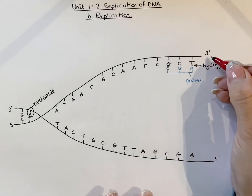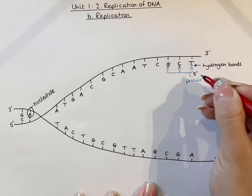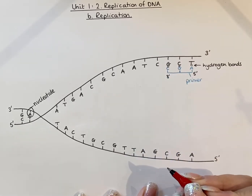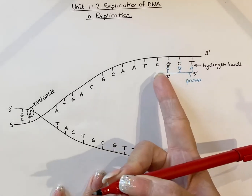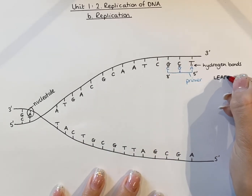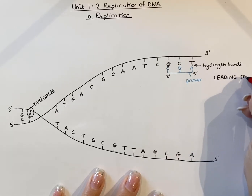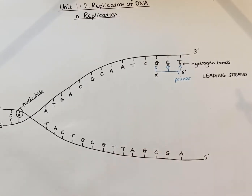In terms of prime ends, if this is a three prime, this must be a five prime end, and therefore if this is a five prime, this would be a three prime. This side is what's known as the leading strand. The leading strand is replicated continuously — meaning it is replicated without any gaps, and it continuously adds nucleotides all the way along and won't stop until replication stops.